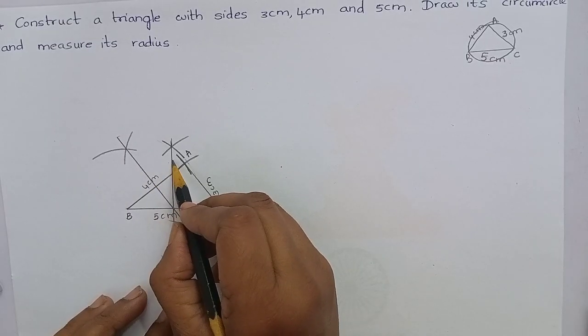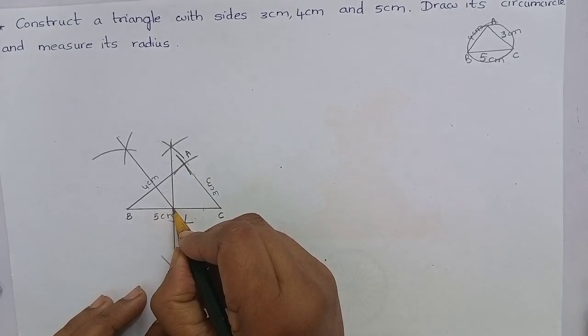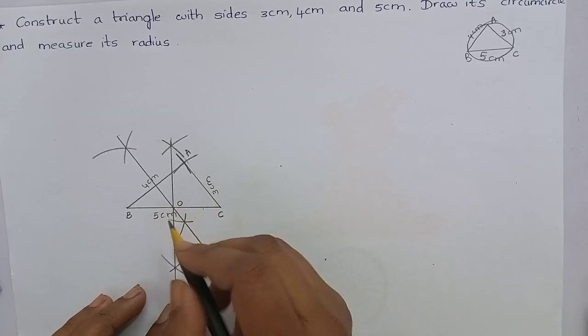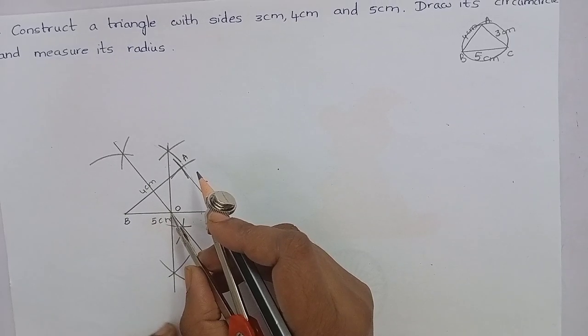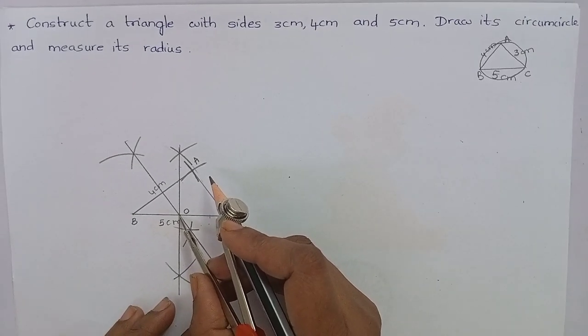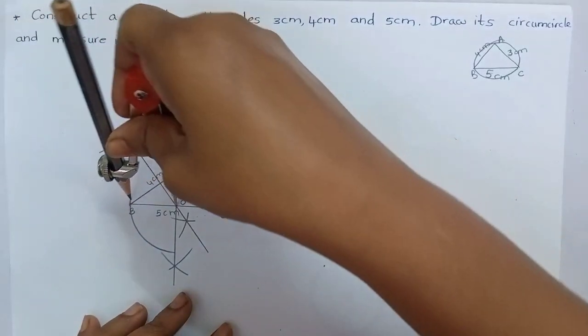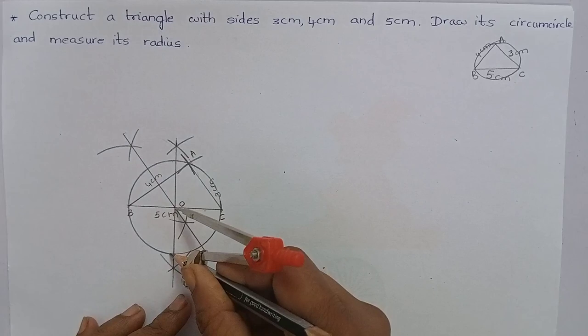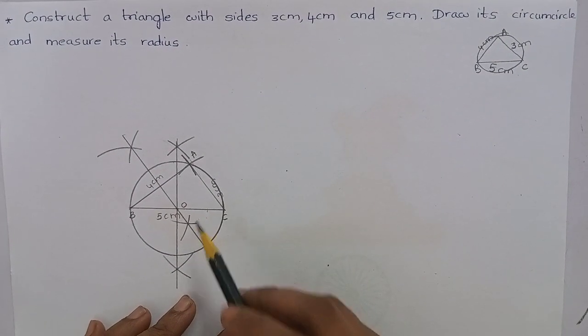These two perpendicular bisectors meet at this point. Name this point as O. And it is the circumcenter of a circle. Now, let's draw its circumcircle. We have constructed a circumcircle to the triangle.